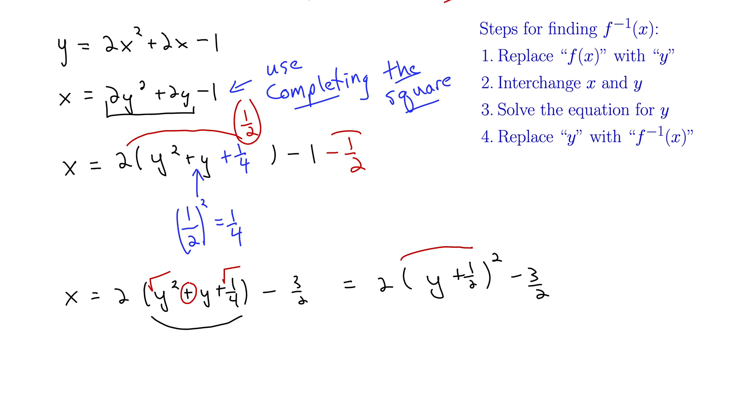And now we have something we can actually solve. So this is x equals that. So I'm going to add 3 halves to both sides. x plus 3 halves equals 2 times y plus 1 half squared.